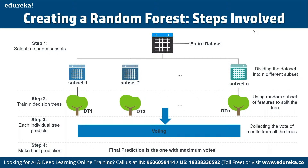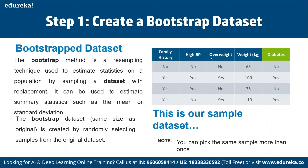The bootstrap data set is a resampling technique used to estimate the population by sampling a data set with replacement. It can estimate summary statistics such as mean or standard deviation. The bootstrap data set is created by randomly selecting samples from the original data set — for example, variables like family history, high BP, overweight, total weight, and the possibility of having diabetes as yes or no.